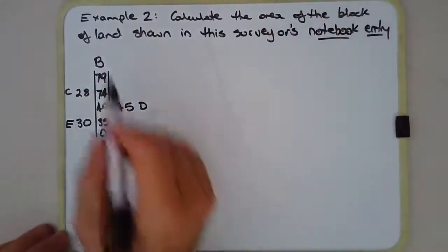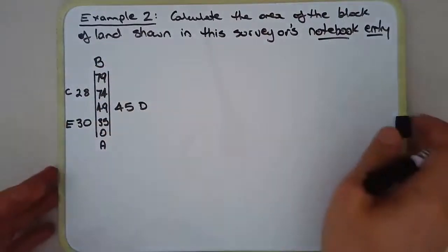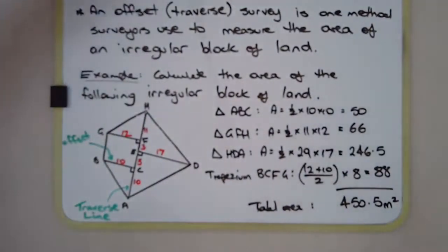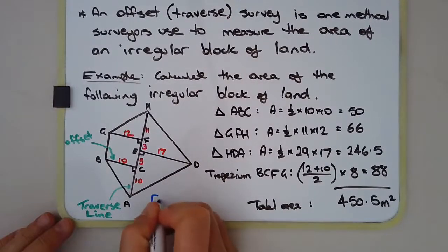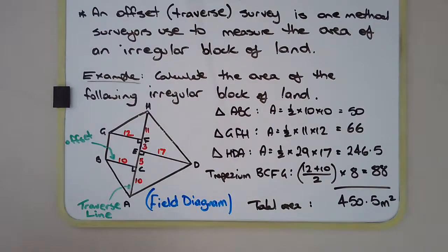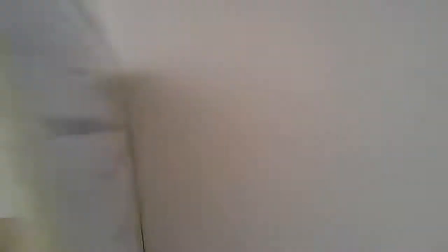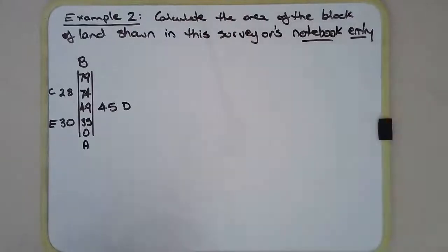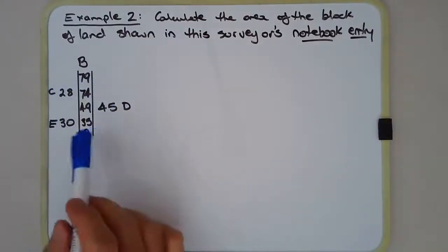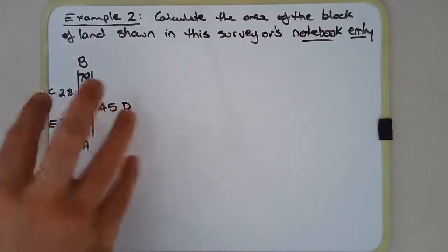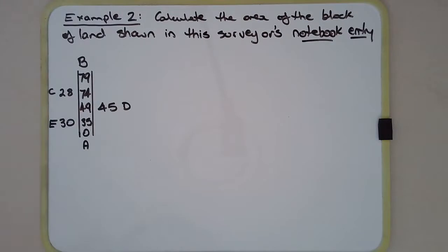Let's have a look at another example. And this example is a little bit different in that the measurements are expressed a little bit differently. Now, by the way, this is what we call a field diagram. So I'll just make a note of that now. So this is what we call a field diagram. And there's another way we can express these measurements. Something called a notebook entry. It's not a field diagram, but it actually represents the vertices of a field diagram. So in this example, we need to calculate the area of the block of land that's represented in this notebook entry. So we do call that a notebook entry. In fact, that's sort of a technical term for it.